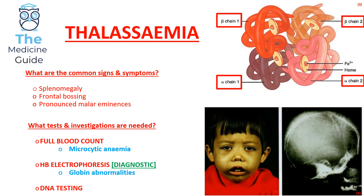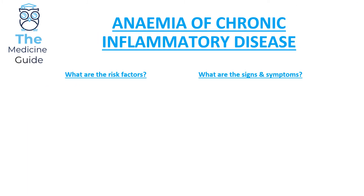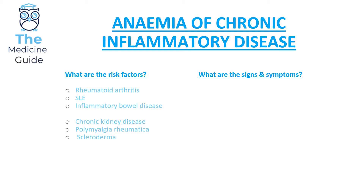Anaemia of chronic inflammatory disease is highlighted in blue because it can present as either microcytic or normocytic anaemia. Risk factors include chronic inflammatory conditions such as rheumatoid arthritis, SLE, inflammatory bowel disease, polymyalgia rheumatica, scleroderma, or chronic diseases such as chronic kidney disease.